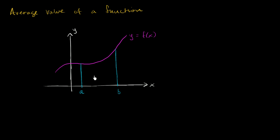One way to think about it is: what is the average height of this function? Well, one way to think about it — it would be some height so that if we multiply it times the width of this interval, we'll get the area under the curve.